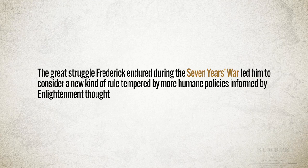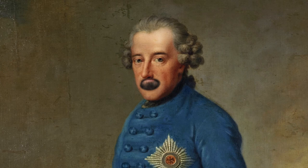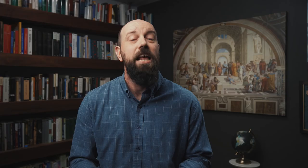The great struggle that Frederick endured during the Seven Years' War led him to consider a new kind of rule tempered by more humane policies and formed by Enlightenment thought. If you compare Louis XIV's assessment of his own power — 'I am the state' — with Frederick's new assessment — 'I am the first servant of the state' — you can clearly see the transition. Additionally, Frederick took pains to justify his rule not by the divine right of kings, but rather by implementing policies that improved the lives of his subjects.